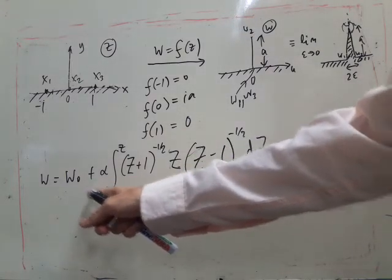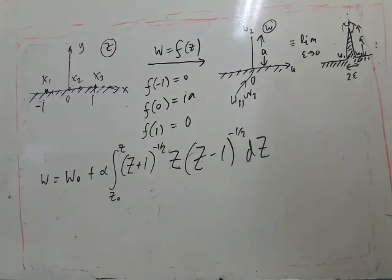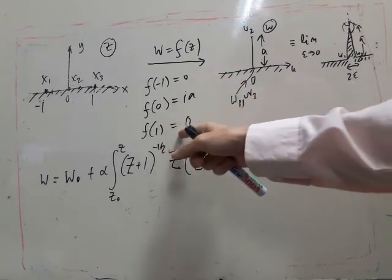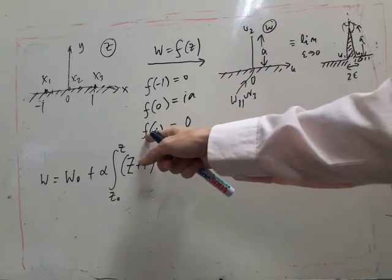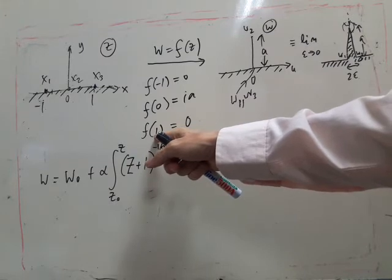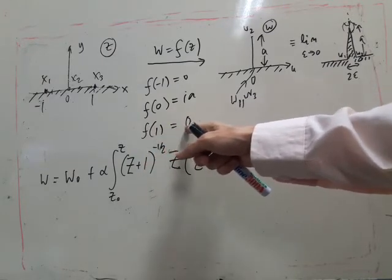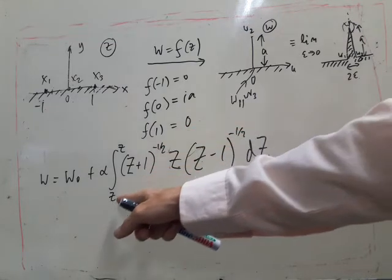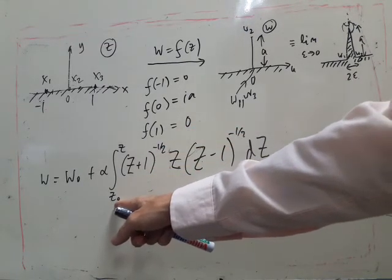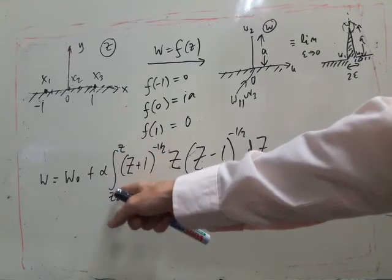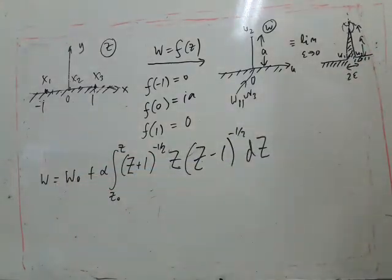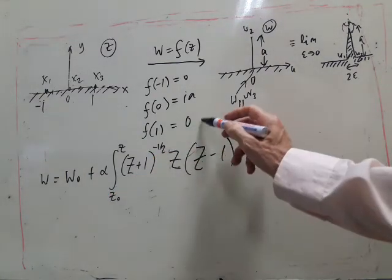So let's next choose what z naught and w naught. How are we going to work those out? Well, the usual thing is to use one of these relations. The simplest seems to be to use what happens when z equals 1. When z equals 1, we want to get w equals 0. So that can happen if we make z naught equal to 1. Then when z is 1, we've got integral from 1 to 1 is 0. And that means we can make w naught 0 as well. So we've used this one.